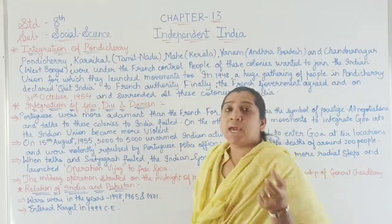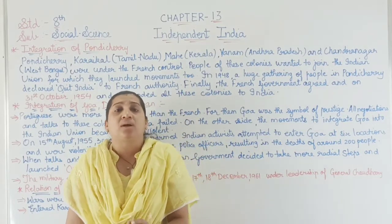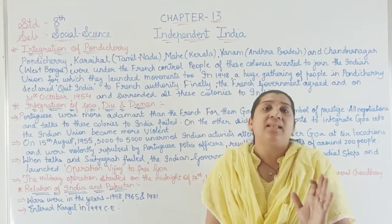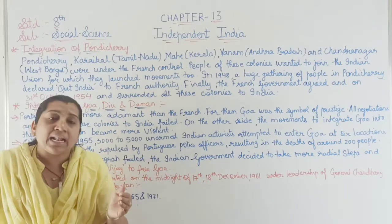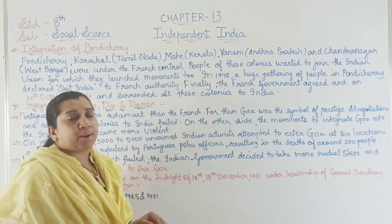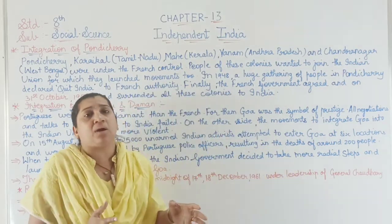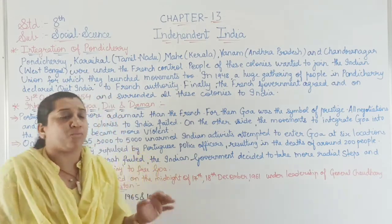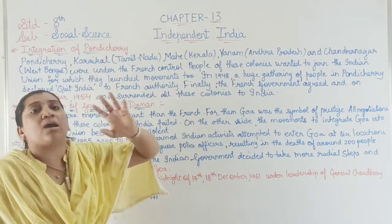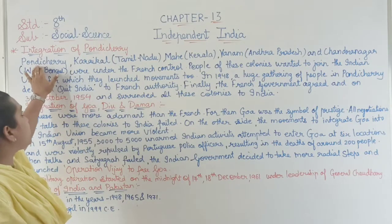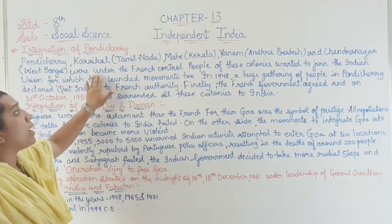Now let us look at the integration of foreign-controlled territories. All European countries — Portuguese, Dutch, French, Britishers — came to India. The Britishers left in 1947, but French and Portuguese still controlled some parts of India. Regarding French-controlled areas: only Pondicherry, Karikal in Tamil Nadu, Mahé in Kerala, Yanam in Andhra Pradesh, and Chandernagore in West Bengal were under French control.